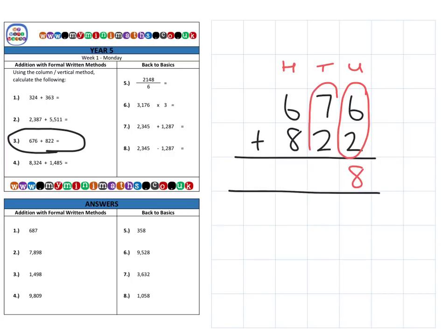Then we have the 7 tens and the 2 tens, 9 tens. And then next we have 600 plus 800. Now here we have 14, 1,400. So we place the 400 in the hundreds column, and then we carry the 1,000 into the thousands column over here.